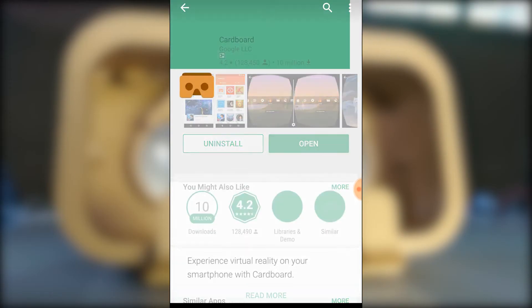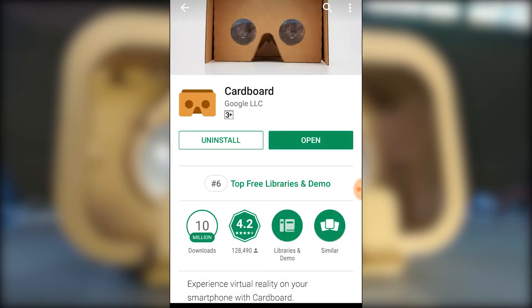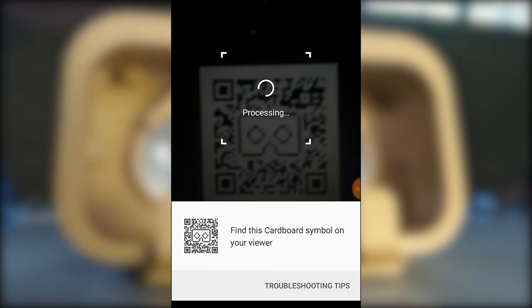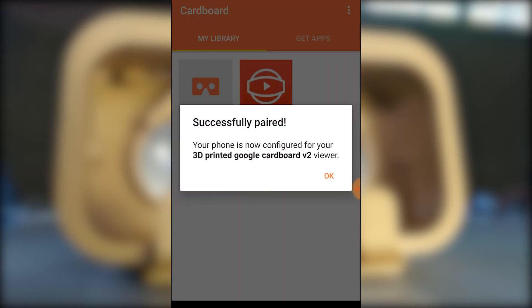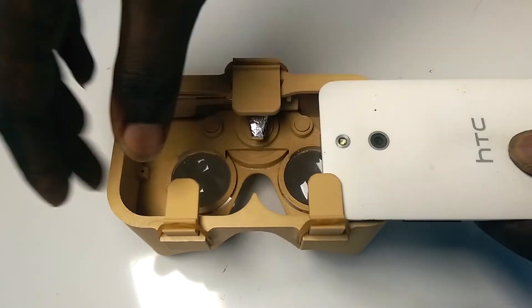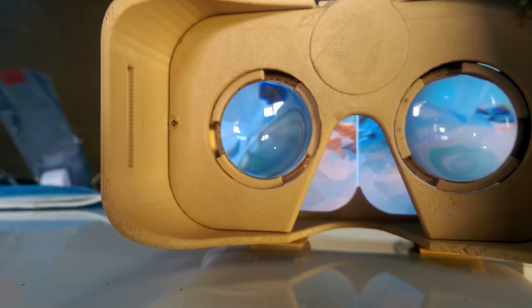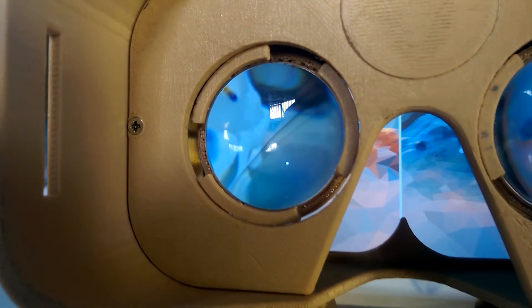The last thing you will need to do is to download the Google Cardboard app from your app store and scan the QR code included with the STL files. Once that's done, you can slide in your smartphone and start enjoying the immersive world of virtual reality.